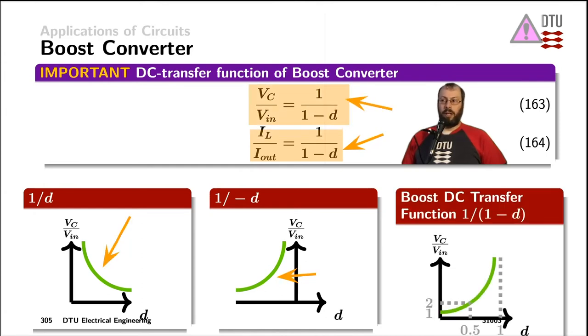And finally, we shift the independent variable, which is the duty cycle here on the x-axis, by a factor of 1 to understand how the DC transfer function of 1 over 1 minus d looks like.